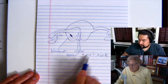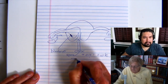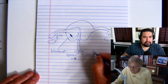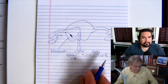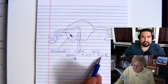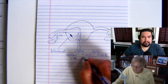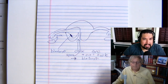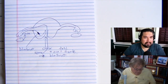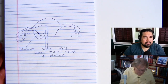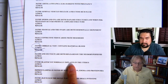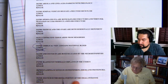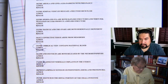Sperm and ovum form the zygote — that's fertilization. After about two weeks, what implants is the blastocyst. So question 27 — 'the blastocyst normally implants in the uterus' — is absolutely true.